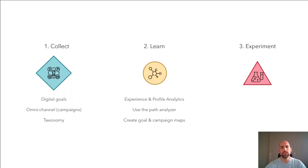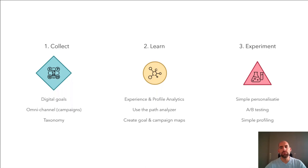That's step two: just watch what's going on. Configure some goals and campaigns, and with the tools in Sitecore start learning from it. The Path Analyzer is one of the greatest tools in Sitecore — it helps you really understand how visitors behave on your site, which paths they're using, and where you need to optimize or where you possibly lose some value. From there, like Ken and Dennis mentioned, you can start with simple personalization, A-B testing, or profiling. But for me it all starts with getting goals and campaigns in place.